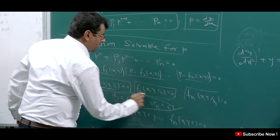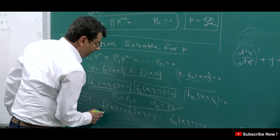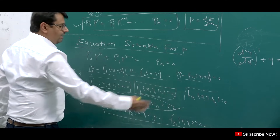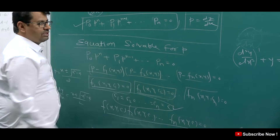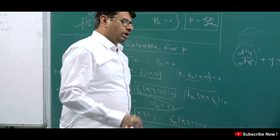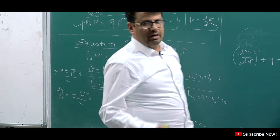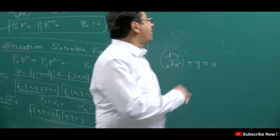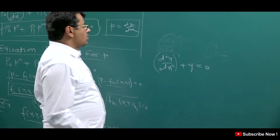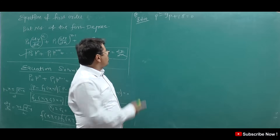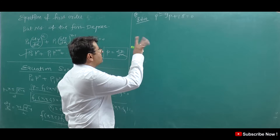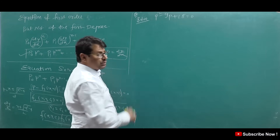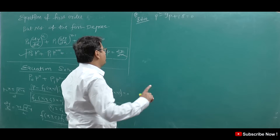What do we do with all the solutions? We combine them in the form of a product — we multiply them all together and set equal to zero. That gives our final solution. I will explain this with a question. Here: p² - 9p + 18 = 0. This is the first example for this topic.